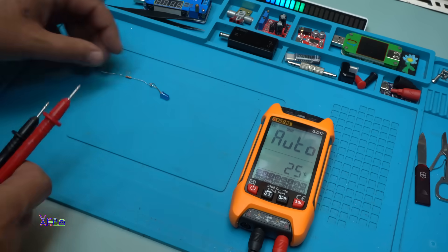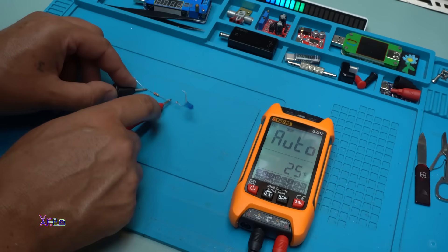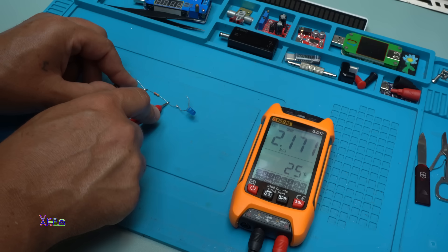It's set on auto. This is a 2.2 kilo ohm resistor. 2.17. Okay.